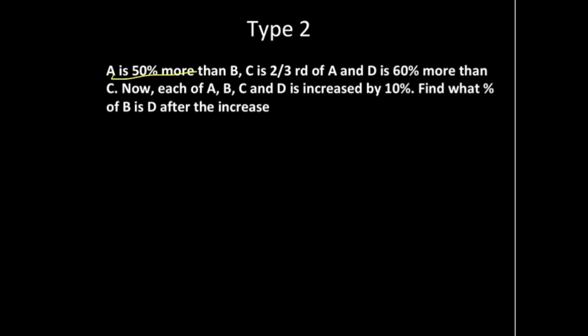A is 50% more than B, C is 2/3rd of A, and D is 60% more than C. Now each of A, B, C, and D is increased by 10%. Find what percent of B is D after the increase.